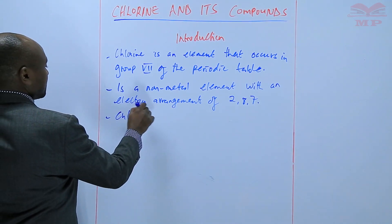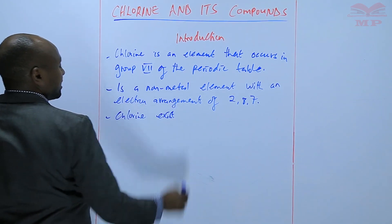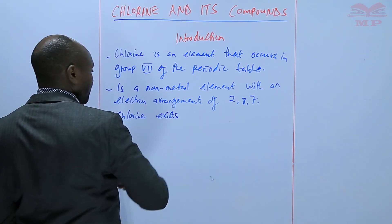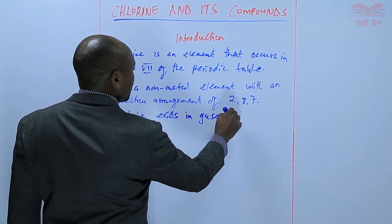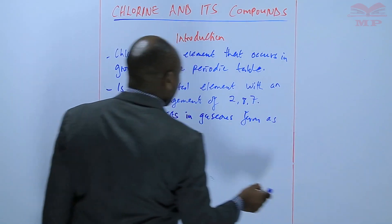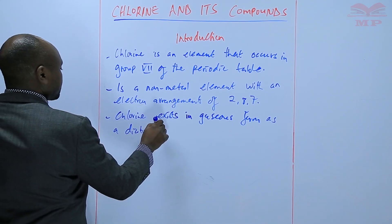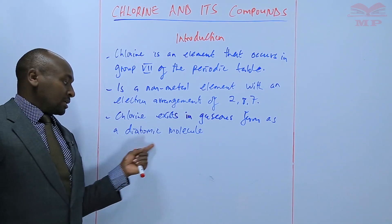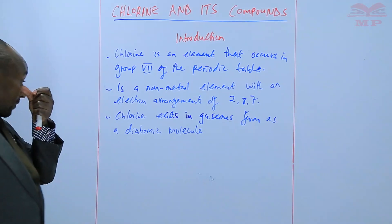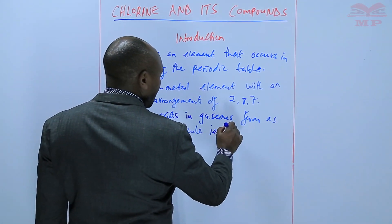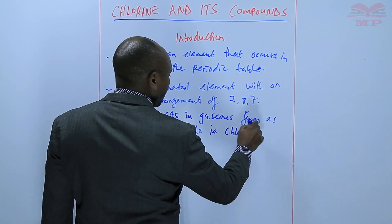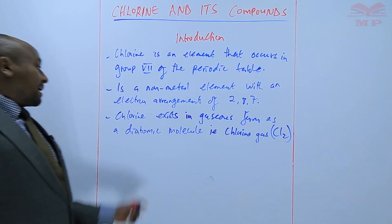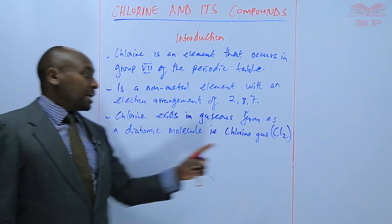Chlorine exists as a gas and this gas exists as a diatomic molecule. So chlorine exists in gaseous form as a diatomic molecule — that is, a molecule that is made of two atoms. That's why we write the formula for chlorine gas as Cl₂, showing that it exists as a diatomic molecule made up of two atoms.